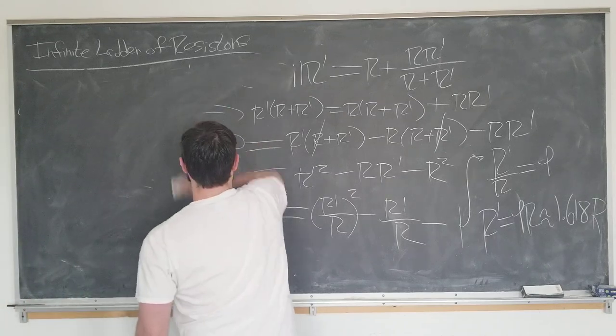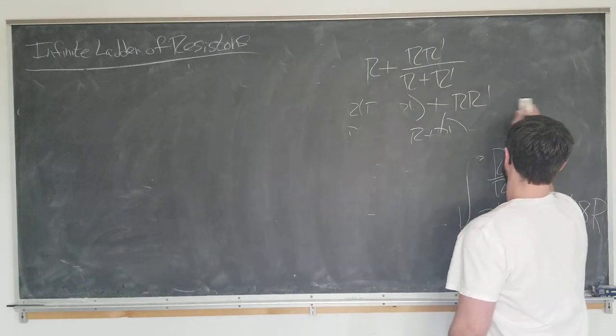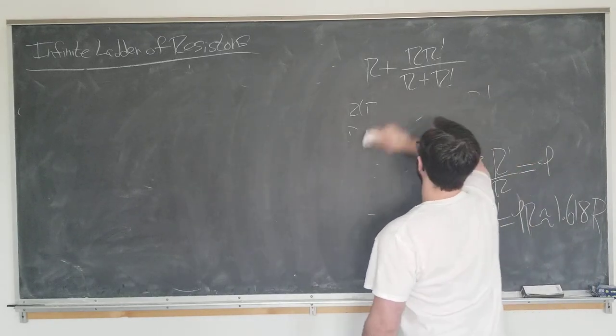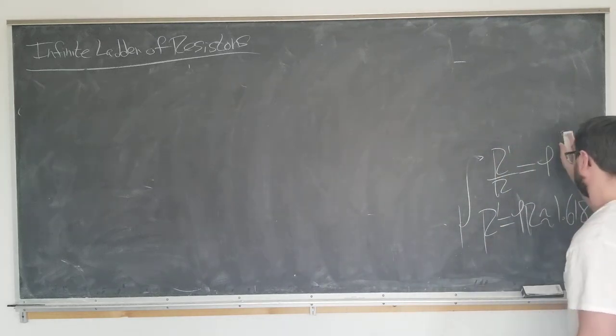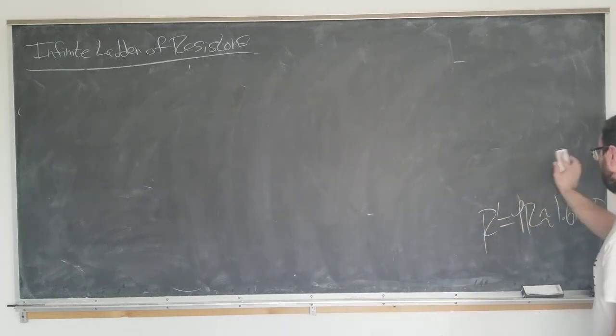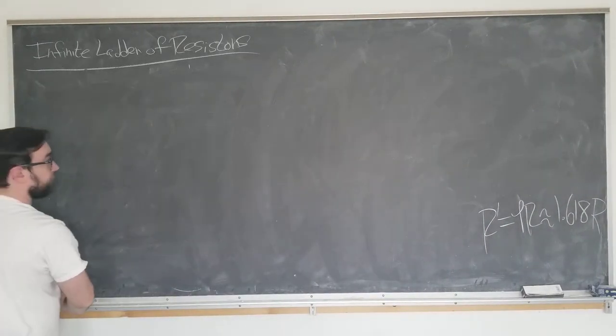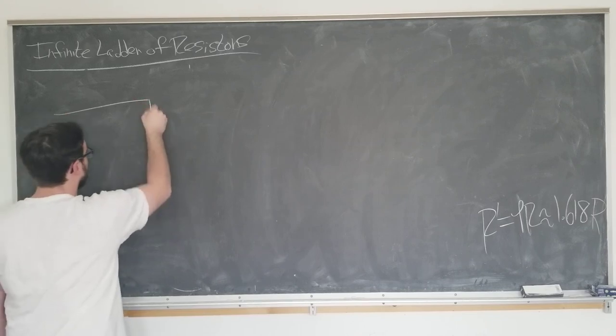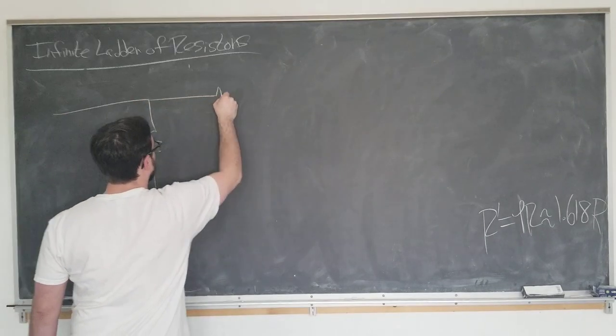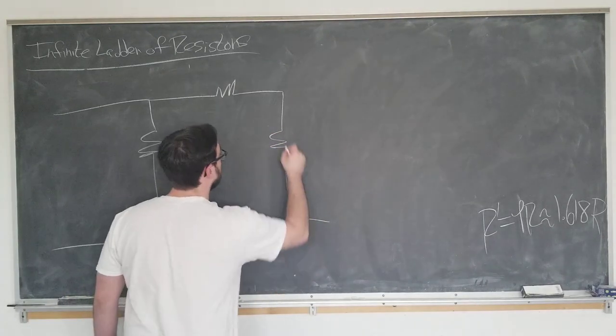Let's erase all this. We just need this here: r prime equals r times phi. Now, we are going to consider a very similar ladder. We're going to consider the same ladder, but with the first resistor removed. We're still going to go on forever.